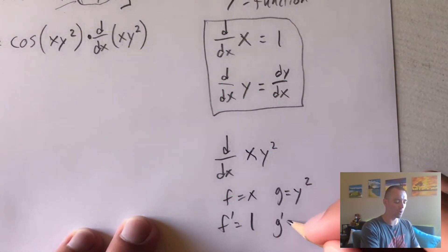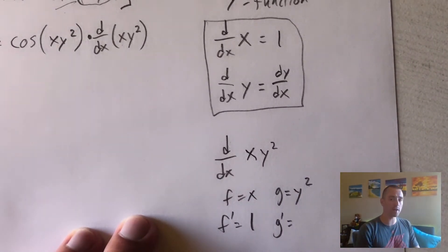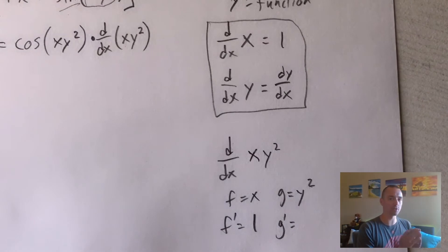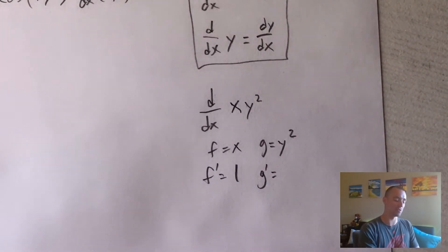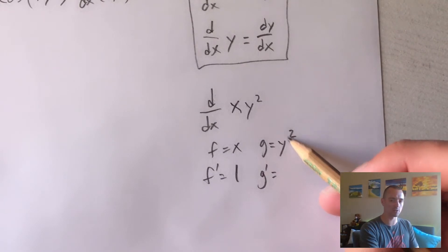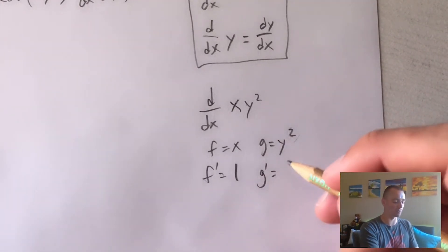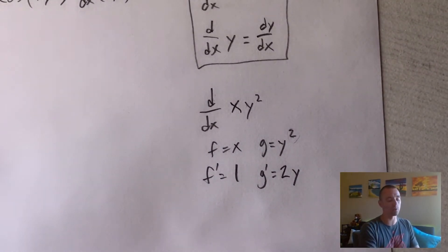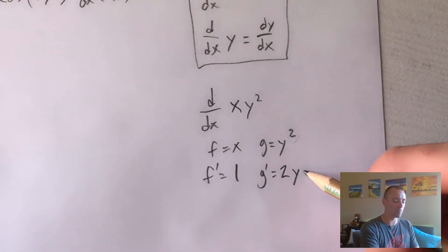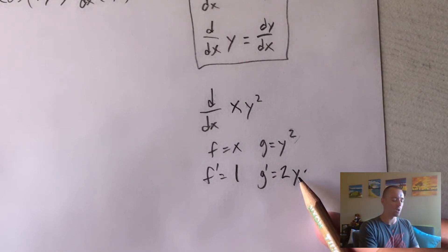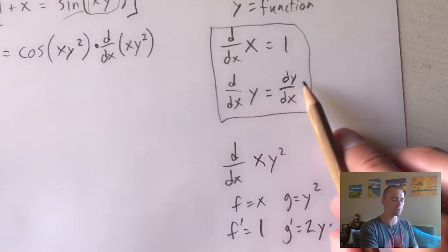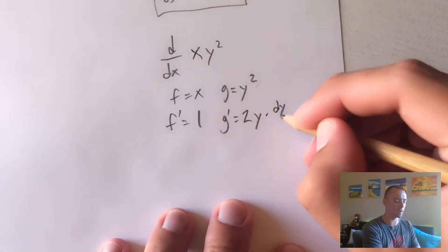For g prime, we need the derivative of y squared. Since y is a function, taking the derivative of y squared requires chain rule again — y is being plugged into the squaring function. So we bring the 2 down in front, leave y alone, and lower the power by one, giving us 2y. Then we multiply by the derivative of the inside function, which is y — and the derivative of y is dy/dx. So g prime equals 2y times dy/dx.